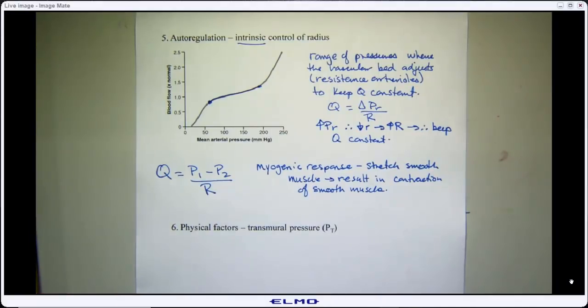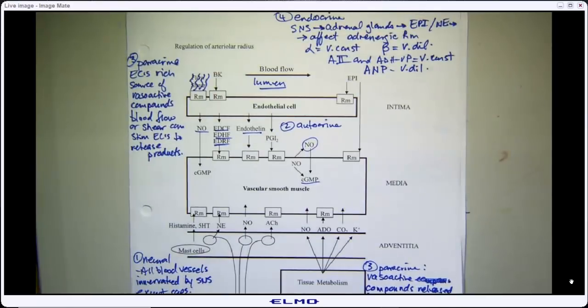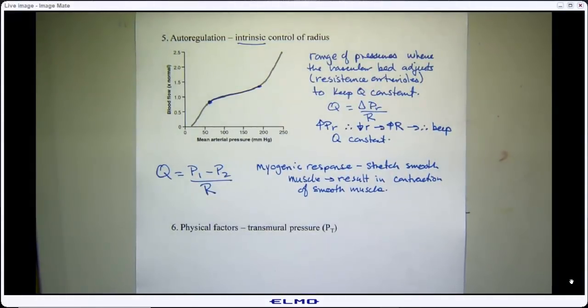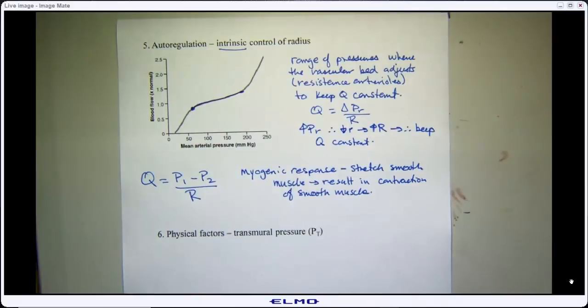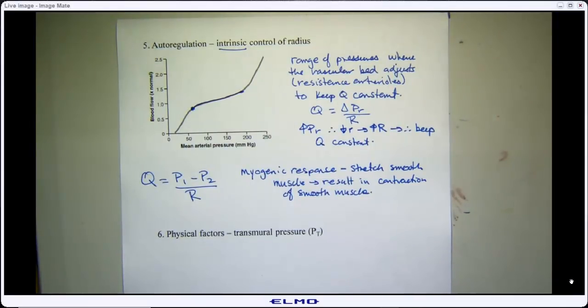Autoregulation is just one of many inputs coming into the smooth muscle — it doesn't mean other regulation is irrelevant. In fact, one reason we need so much input is because we already have intrinsic control. The smooth muscle integrates all of this to decide its behavior. Autoregulation is essentially a stress response to keep blood flow constant regardless of body position.